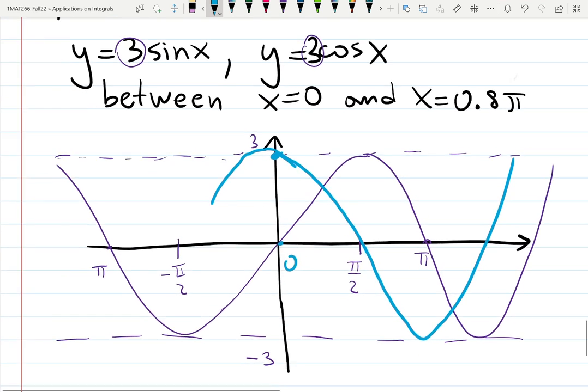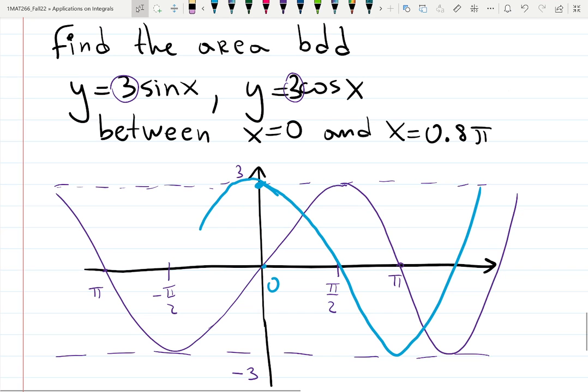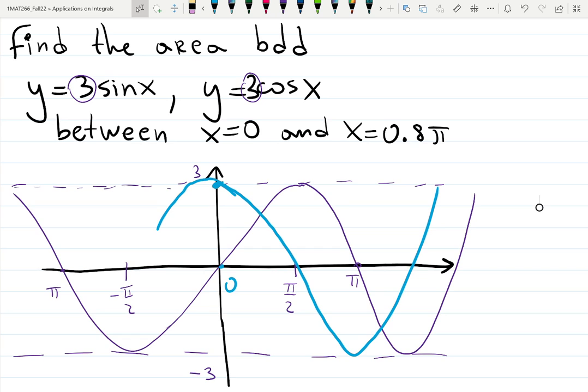Here's a sketch of this problem. Find the area bounded by 3 sine x and 3 cosine x. You draw both functions. They oscillate from minus 3 to 3.